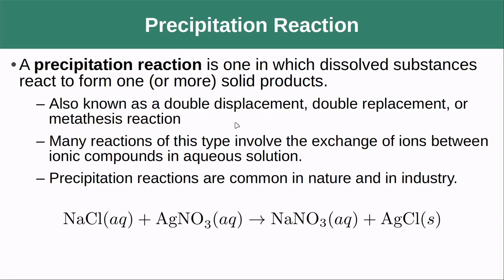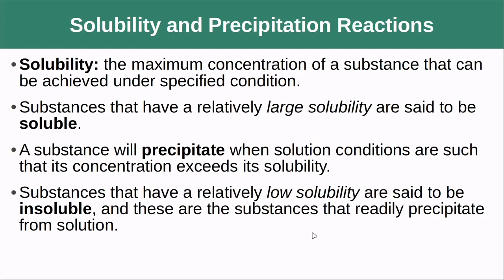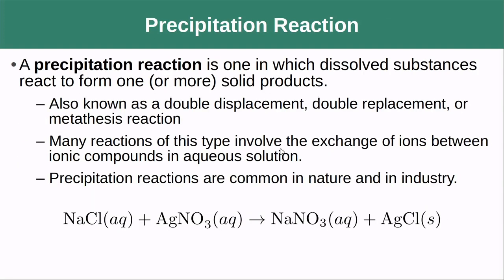These are also known as double displacement reactions because it usually involves pairs of cations and anions switching. So instead of sodium chloride, I get sodium nitrate; instead of silver nitrate, I get silver chloride. They're very common reactions seen in nature and particularly in industry because it's fairly easy to purify these solids out from the rest of the materials. The question is why does one material come out as a solid while the others don't?